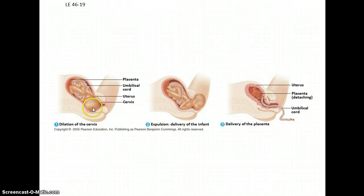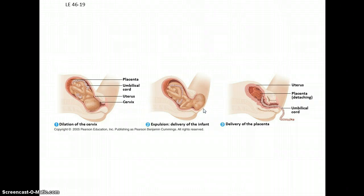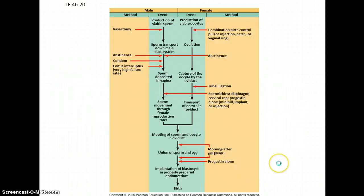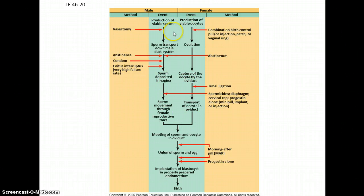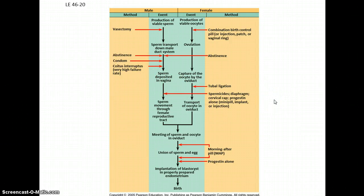Babies are supposed to come out head first — that's the normal and easiest way. Sometimes they're not positioned that way and they have to be manipulated, or sometimes a C-section is required. The placenta is also known as the afterbirth and comes out as well. This also covers the different steps of reproduction and the points where different types of birth control methods are useful for preventing pregnancy.